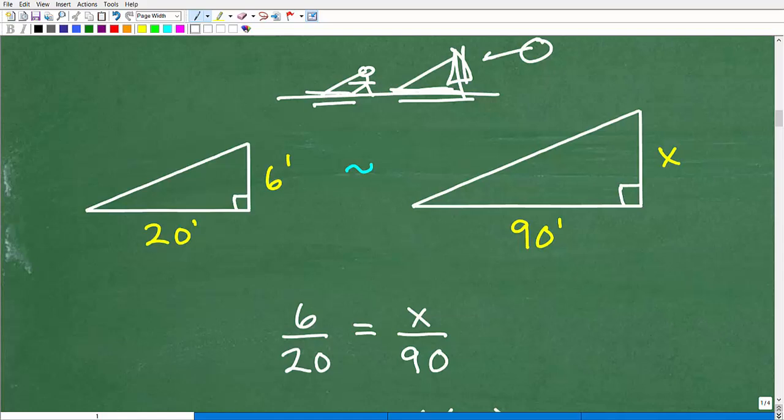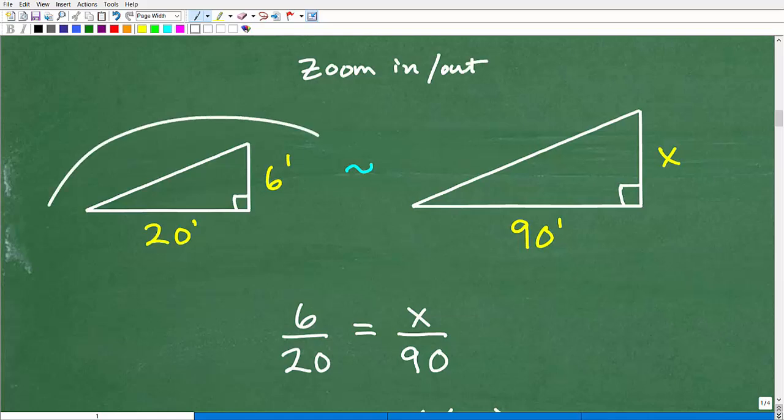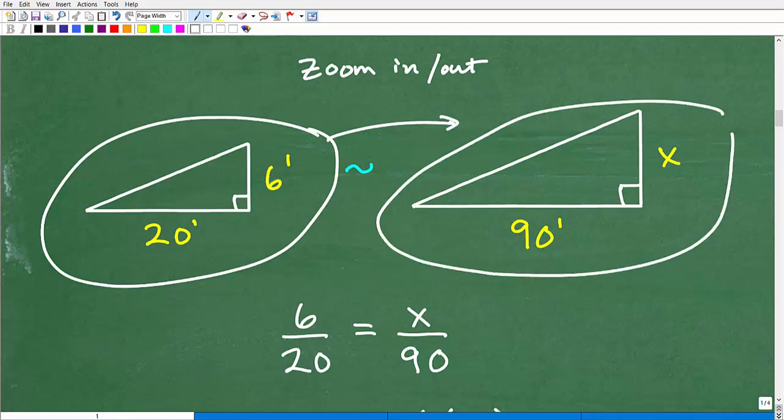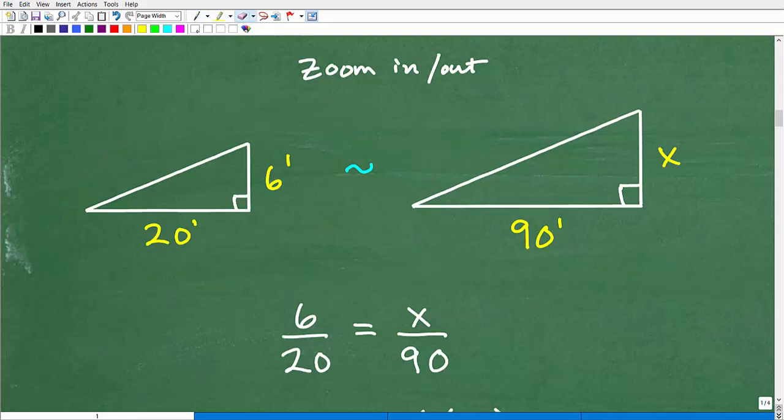And in geometry, we'd call these similar triangles. And it's this symbol right here, this little squiggly line, right? That's being similar. And basically the way you can think of a similar triangle is, I like to kind of think of it as a zoom in or out situation. So if I have this triangle and I zoom out, I have a larger version of it. Or if I have this larger version and I zoom in, I have the smaller version. But basically here's the deal with similar triangles.